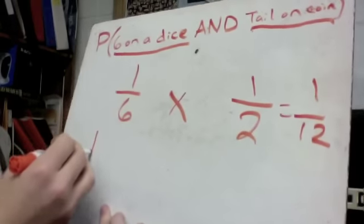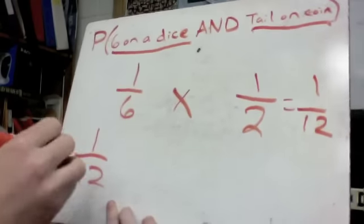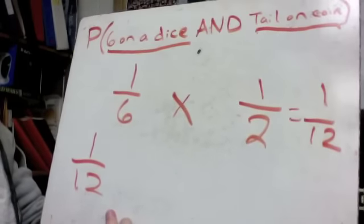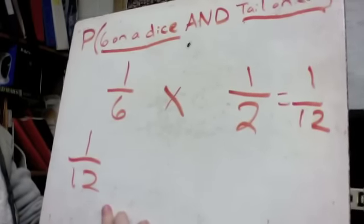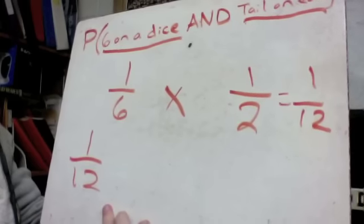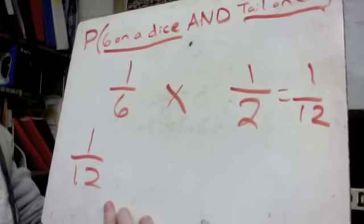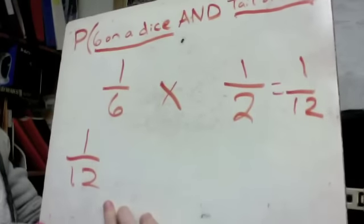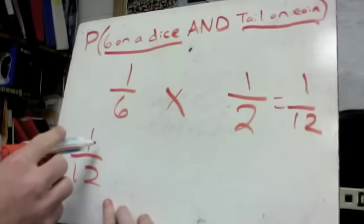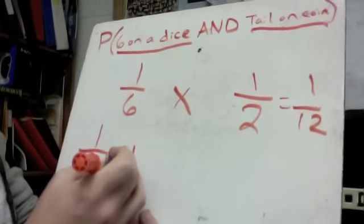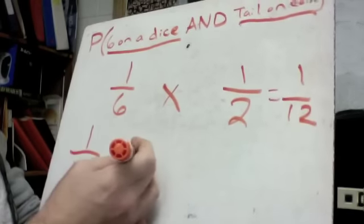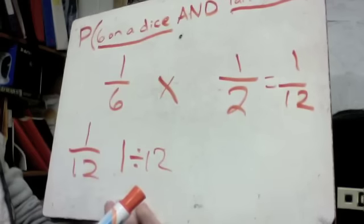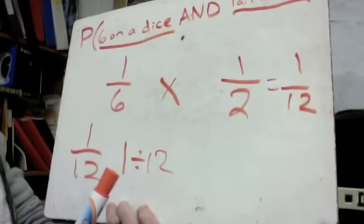Now I want to take this further. If we have one out of 12, I want to figure out what percentage that is. This also works for test scores — something out of something else. All I have to do is take the numerator, the top number, and divide it by the bottom number, which is 12. Make sure you do this in the right order: it's one divided by 12, not 12 divided by one.